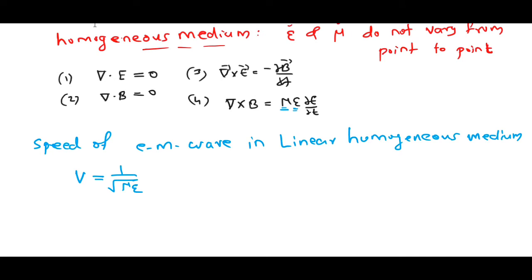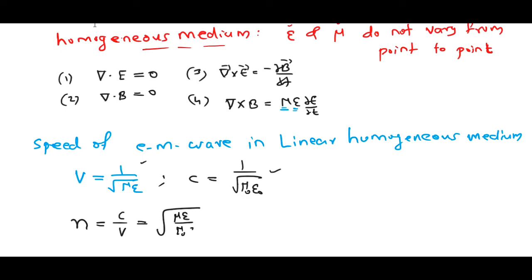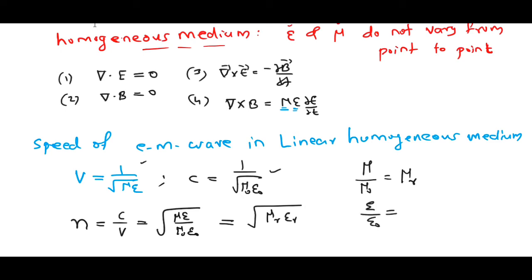If we want to calculate the refractive index, the expression is n = c/v — velocity of light in free space divided by velocity of light in a medium. Substituting these two expressions gives n = √(με / μ₀ε₀) = √(μr · εr), because μ/μ₀ is the relative permeability and ε/ε₀ is the relative permittivity.